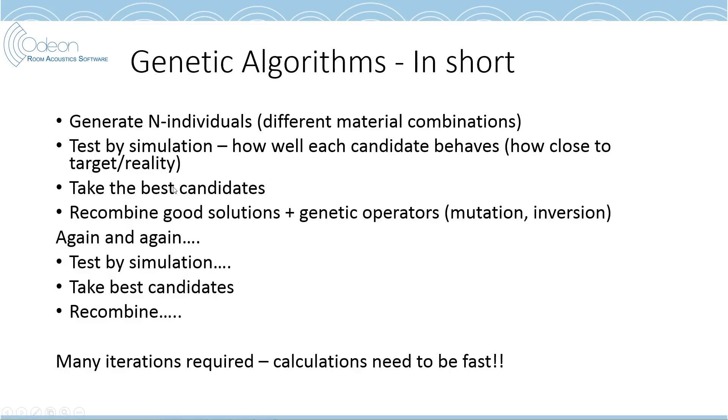Then, having tested these candidates, we take the best one of those, maybe 50% or so. And then, we recombine these good solutions while, at the same time, we use genetic operators as mutation and inversion. And then, again and again, we test by simulation how good are the candidates, take the best candidates and recombine and so on. This takes many iterations, and therefore, the calculations you use must be fairly fast.